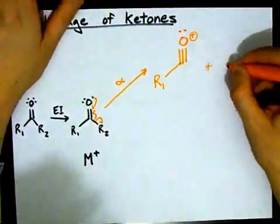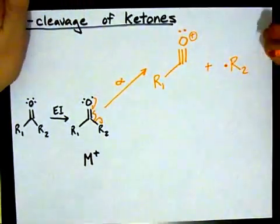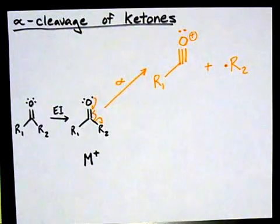What you're left with, on the other hand, is this R2, and it is a radical. It is neutral and will not be detected in your mass spectra.